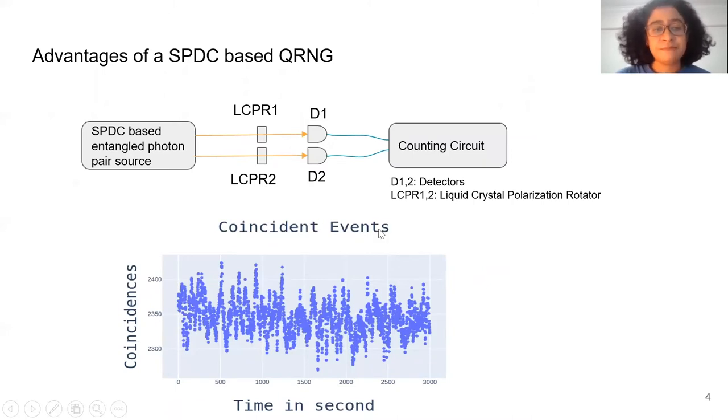This is a simple diagram of our optical source. We have built this SPDC based entangled photon pair source. This optical source uses spontaneous parametric down conversion to generate a pair of photons. One high energy photon is split into two low energy photons following conservation of energy and momentum. We have two LC pairs which are liquid crystal polarization rotators to select the basis of these photon pairs. D1 and D2 are two silicon-based avalanche photodiode detectors to detect these photons individually. We have a counting circuit that records the coincident events per second and we use the quantum shot noise of these coincident events as our source of randomness.